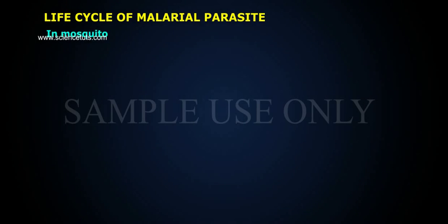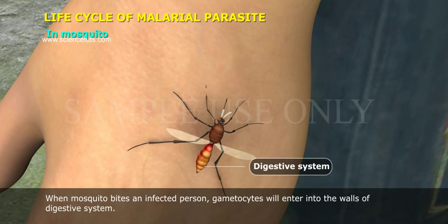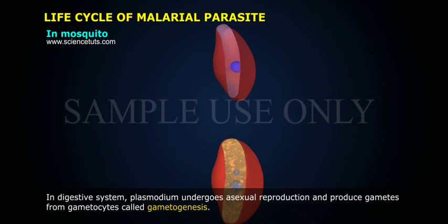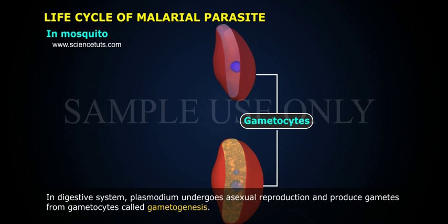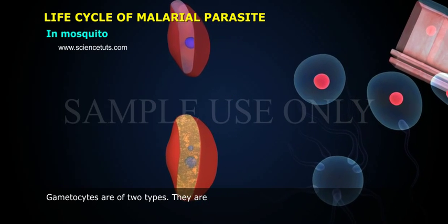When a mosquito bites an infected person, gametocytes will enter into the walls of the digestive system. In the digestive system, Plasmodium undergoes gametogenesis, producing gametes from gametocytes. Gametocytes are of two types.